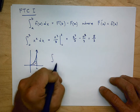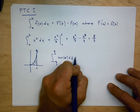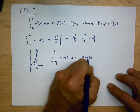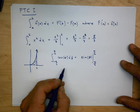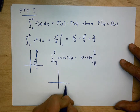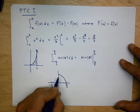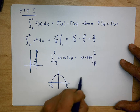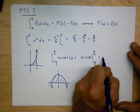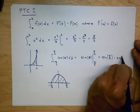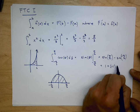Let's do another one: from −π/2 to π/2 of cos(θ) dθ. The antiderivative of cosine is sine. So I have sin(θ) evaluated from −π/2 to π/2. Let me draw a quick graph: here's π/2, here's −π/2, and cosine starts up high and comes down. We take sin(π/2) − sin(−π/2) = 1 − (−1) = 2.